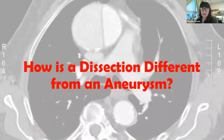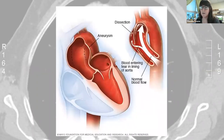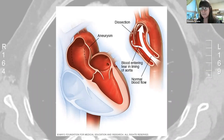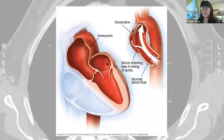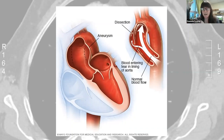How does a dissection differ from an aneurysm? You can have an aneurysm and live with it without even knowing it, but a dissection is something you'll definitely feel. If an aneurysm is the bulging of the vessel at a weakened area, a dissection occurs when there is a tear along the innermost layer of the aorta — the intima — that allows blood to flow between the layers of the aortic wall, forcing those layers apart. The tearing creates a false lumen where blood flows instead of through the true lumen.